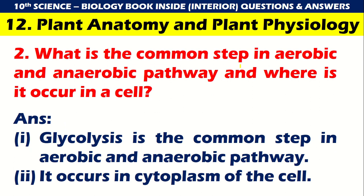What is the common step in aerobic and anaerobic pathway and where does it occur in a cell? The common step is glycolysis. Glycolysis is the common step in aerobic and anaerobic pathway and it occurs in the cytoplasm of the cell.